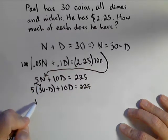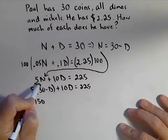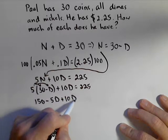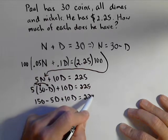So I have 5 times 30 minus D plus 10D equals 225. I'm going to distribute the 5. So your parentheses are important during substitution.